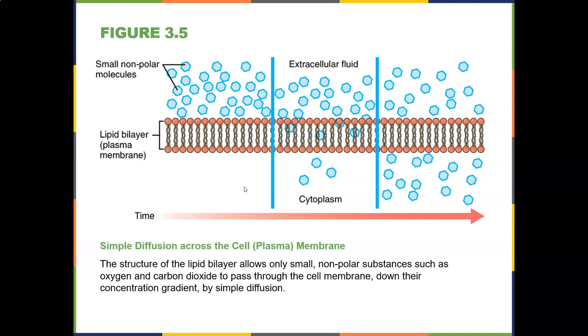Osmosis is the diffusion of just water. If there is a high concentration of water on one side and no concentration on the other, as it moves from high to low concentration, that's called osmosis.